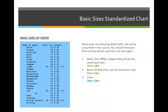Okay, so the answer. Book stock: if we find book and go across, it is 25 by 38. If you find text, offset, and opaque anywhere on this list — offset is right here — it is all the same. Bond and writing: we see bond here. Bond is 17 by 22, and if we find writing down at the bottom, it is also 17 by 22. And last but not least, cover stock is 20 by 26. It doesn't matter what kind of cover stock it is — if it falls into the category of cover, we're going to assume that it has a basic size of 20 by 26.